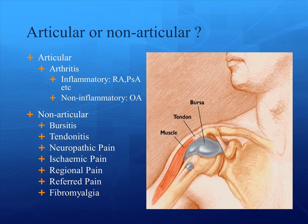So first, we have to differentiate whether it's articular versus non-articular. In articular involvement, the joints can be inflammatory in nature versus non-inflammatory. And for those with non-articular involvement, we'll have to consider if it's a bursitis, tendonitis, whether it's a neuropathic pain or an ischemic pain, or whether this is a referred pain, or if these are actually symptoms of fibromyalgia.